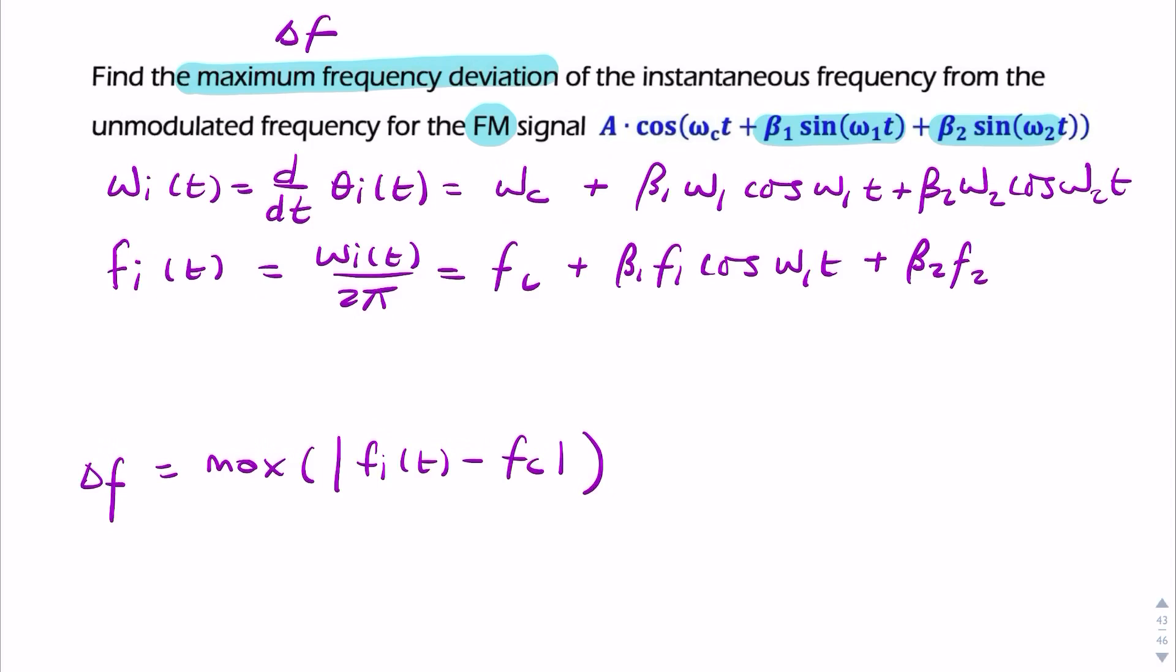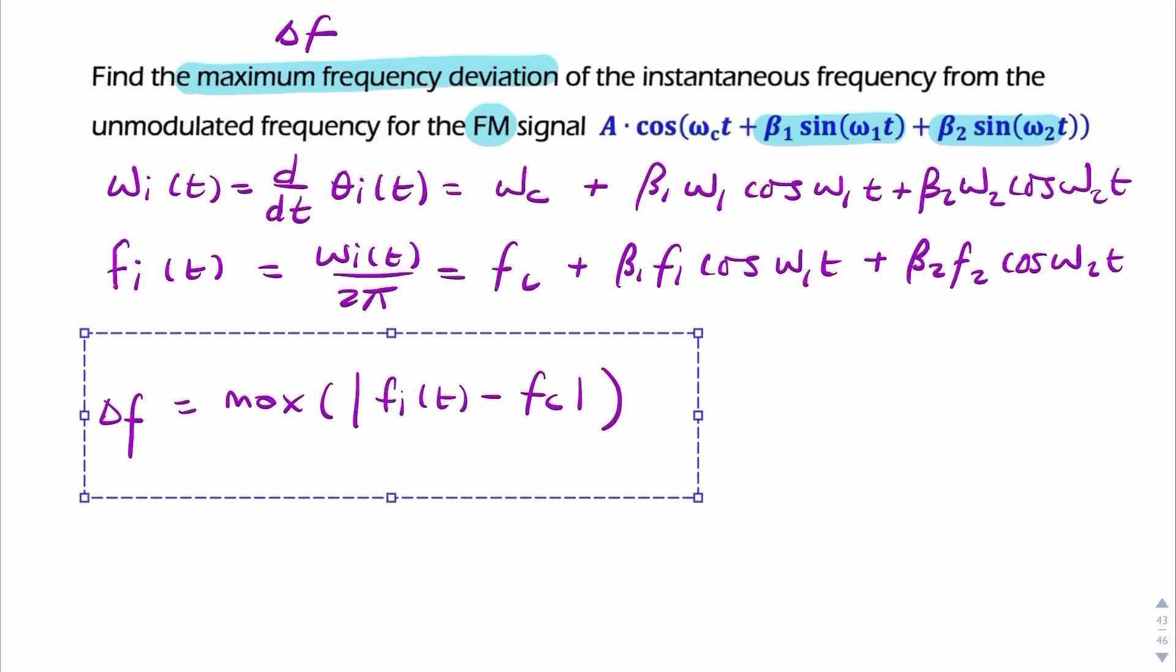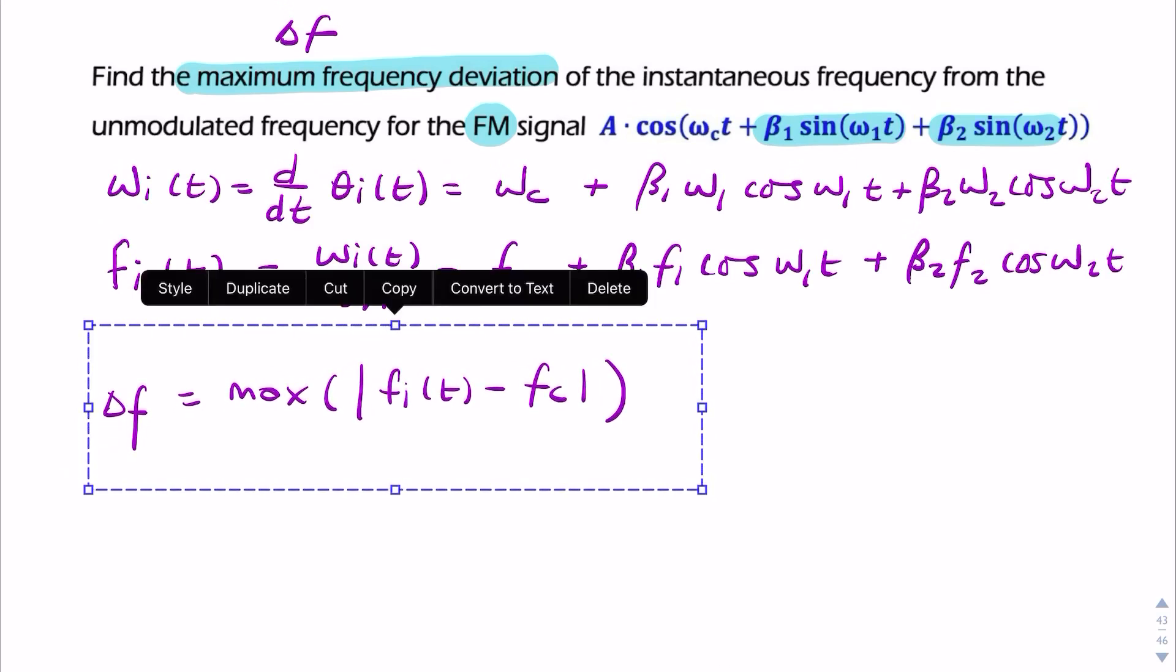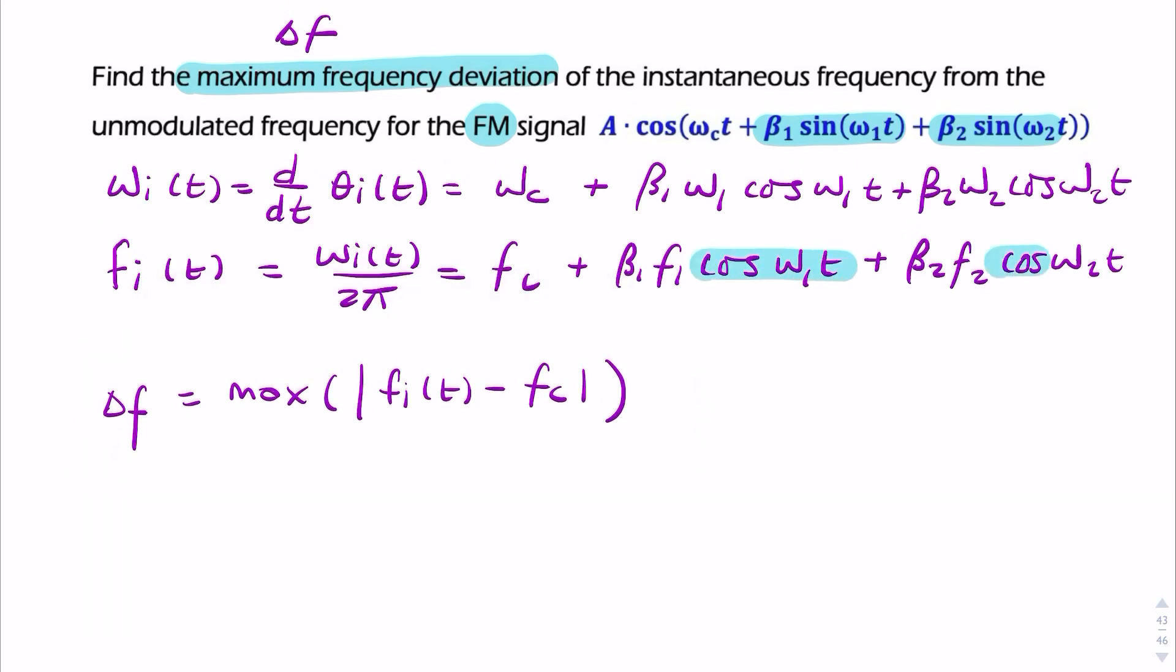So, F2 cosine omega 2t. Now, what we're trying to find is the difference between this and Fc. So we simply subtract.